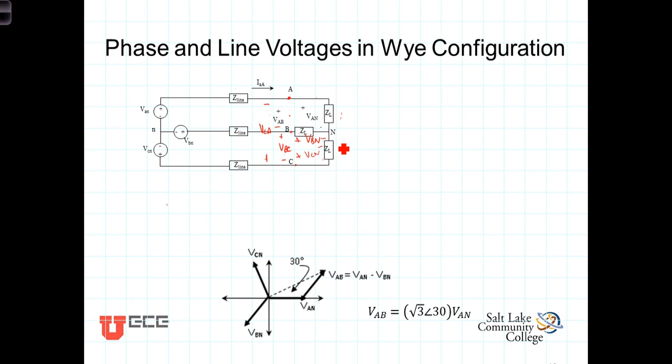Now, to determine the relationship between the two, we're going to write a KVL, starting here at A, dropping down across here, coming back up across there, and back to where we started.